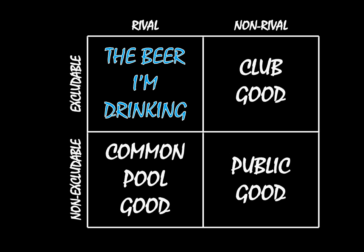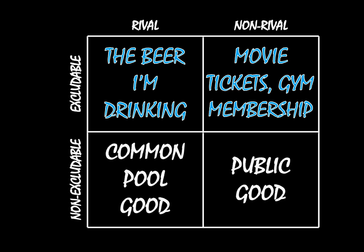Non-rival-excludable goods — those are club goods. What are some examples of that? Well, as it might seem, it sounds like a club, it is a club. So movie tickets, gym membership — those are club goods. There are people at the door, either at the movie theater or at the gym, that deny you access if you don't have the proper ticket or the proper membership. So you have to pay for membership at the gym or you have to pay for your movie ticket.